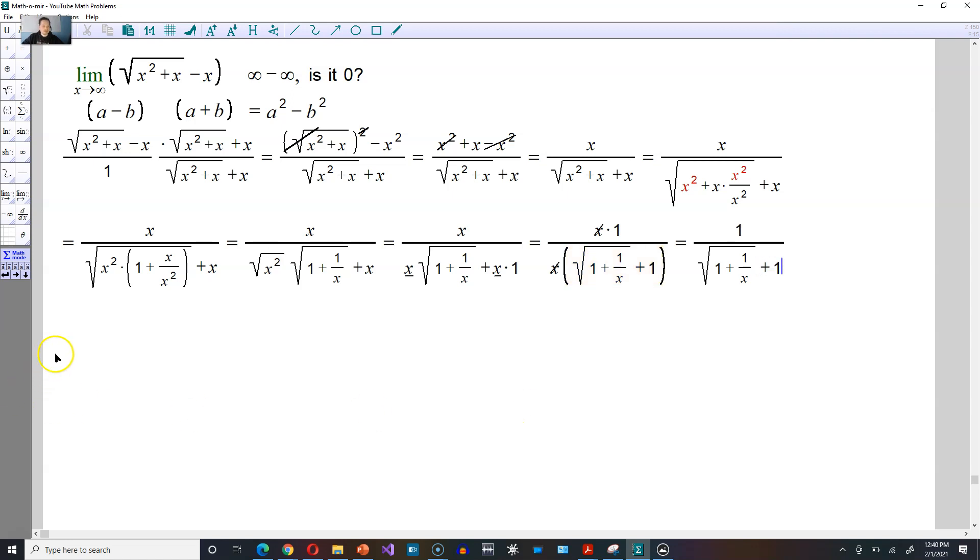Now you can take the limit of this new expression directly. So it's going to be the limit as x approaches here infinity. And you're going to use this expression this way. Take a look. And what you can do essentially is pretend that you are plugging in infinity for x. Pretend. But it kind of works out anyway so it's going to be the following: 1 over and the square root of 1 plus 1 divided by infinity, as if you were doing this. And then plus 1 over here. Now very likely you know that this part right here this will go to 0.